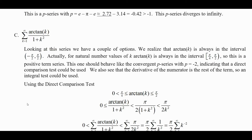The next one is the arctangent of k over 1 plus k squared, summed from k equals 1 to infinity. We have a couple of options here. First, arctangent is always in the open interval from negative pi over 2 to pi over 2. For natural numbers k, arctangent is an increasing function, so it starts at pi over 4 (since arctangent of 1 is pi over 4) and goes up toward pi over 2. So this is definitely a positive term series. It should behave like a convergent p-series because if you ignore the top and the 1 in the denominator, you get 1 over k squared, so we should compare to that.